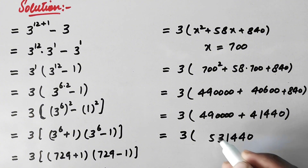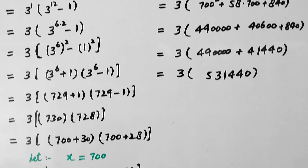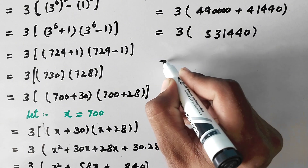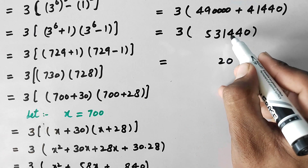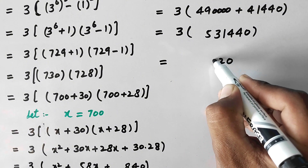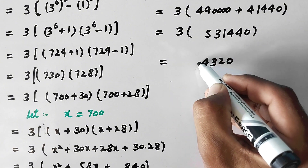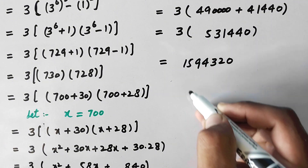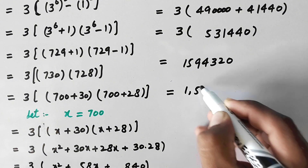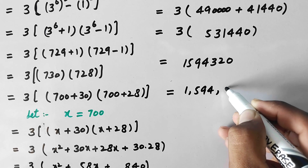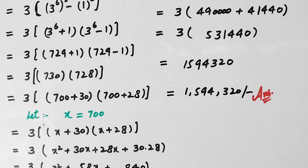Now multiplying the result by 3 to get our final answer. Carrying out the multiplication step by step, the final answer we have obtained is 15,94,300.